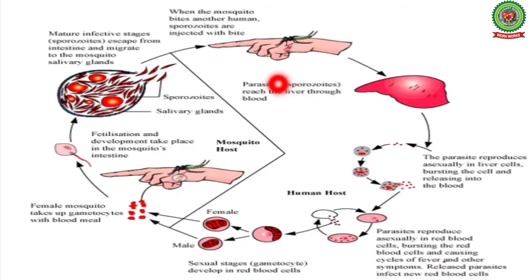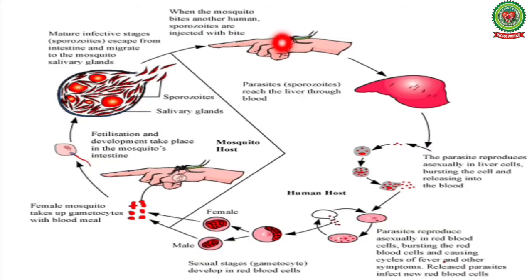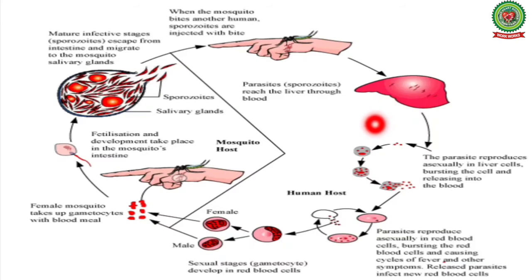Now discussing the life cycle of Plasmodium. The malarial parasite enters the human body through the bite of an infected female Anopheles mosquito. When it bites a human, it injects saliva to prevent coagulation of blood, resulting in the transfer of parasites into the human body in the form of sporozoites. These sporozoites enter the liver cells, where they increase in number by reproducing asexually.